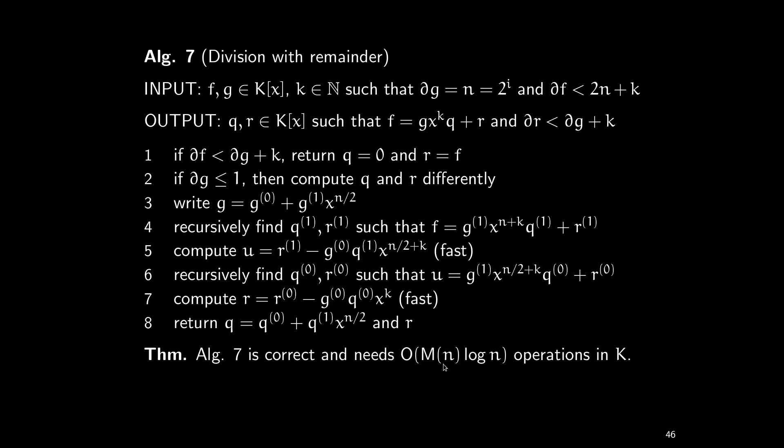So this approach resolves the problem to some extent, because as I said, we don't worry about logarithmic factors. But if we can avoid them, that's even better. And it turns out we can avoid the logarithmic factor here. The algorithm I just showed was the first approach. Now I show that it's even better: we can achieve a complexity that matches the complexity of multiplication. You can divide as quickly as you can multiply.